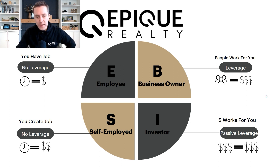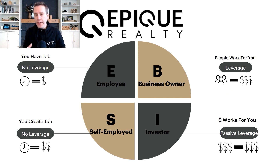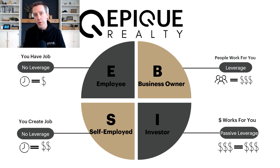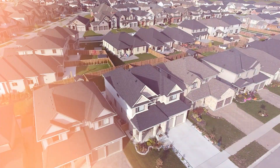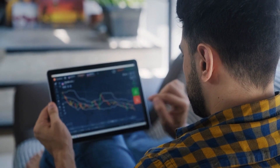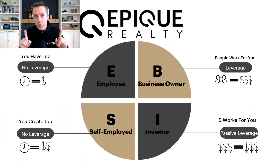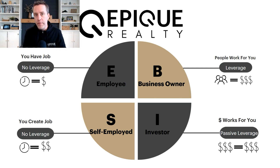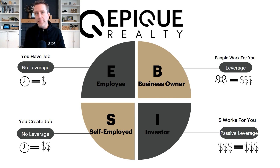Last but certainly not least is the fourth quadrant — the Investor — where you're making money off your money. That's passive leverage. It can come in the form of real estate investing or stock ownership. At Epic Realty, there are six different ways you can earn free stock for basically doing what you're already doing, plus a seventh opportunity to purchase company stock at a big discount — especially valuable right now during the growth phase.